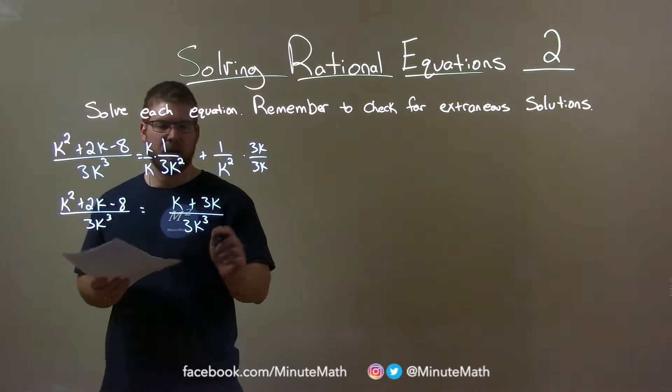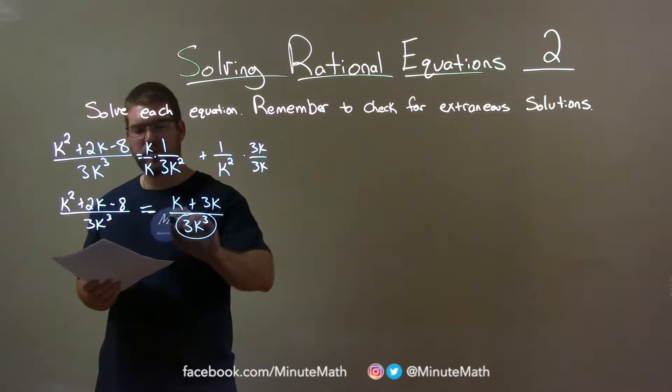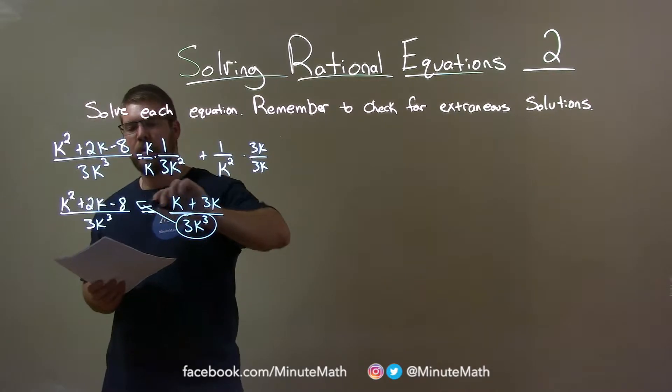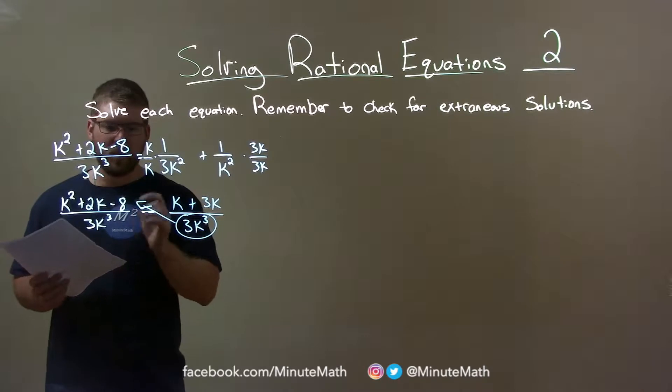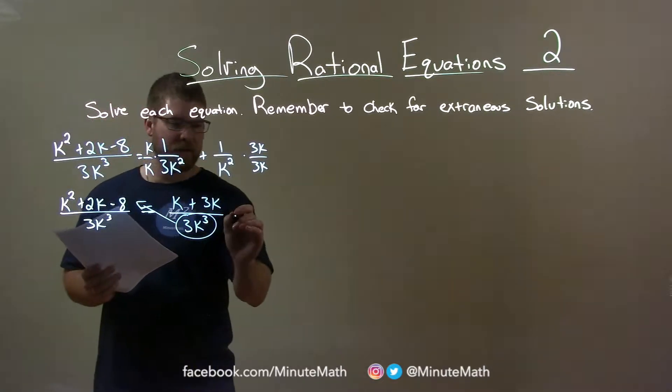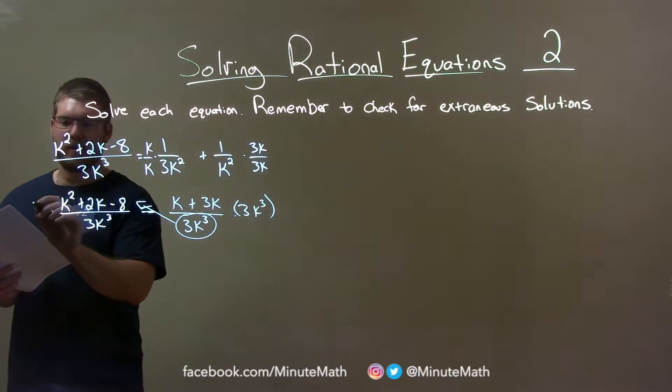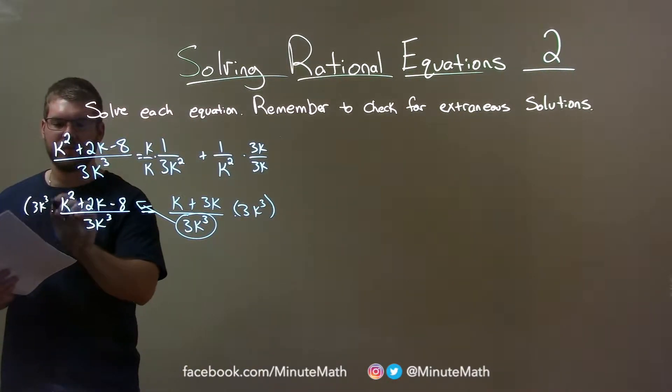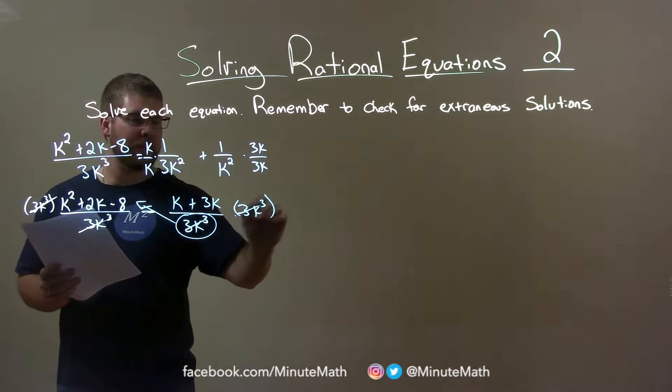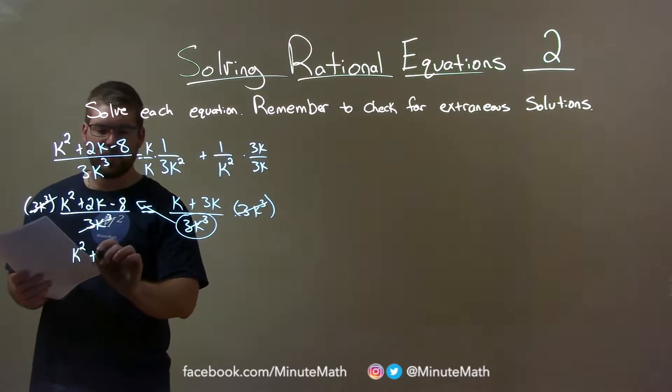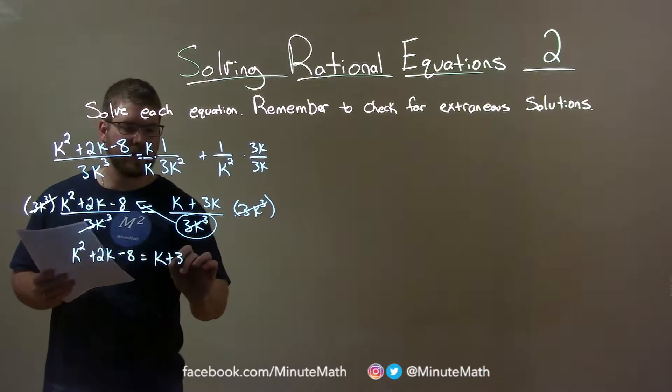Now watch this little trick I like to do. I'm going to take this whole denominator here, and it's kind of like cross-multiplying, but I'm only multiplying this one up and across. So I'm going to multiply both sides by 3k to the third. But what that does, essentially, I multiply both sides by 3k to the third here, and this side by 3k to the third cancels that out. And so now, and these cancel, right? And that leaves me with just k squared plus 2k minus 8 equals k plus 3k.